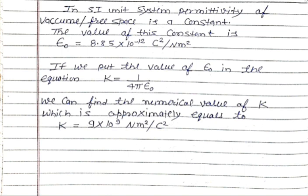In the SI unit system, the permittivity of vacuum or free space is a constant. The value of epsilon-naught is 8.85 × 10⁻¹² coulomb squared per newton meter squared. If we substitute this value into k equals 1 upon 4π epsilon-naught, we get k equals 9 × 10⁹ newton meter squared per coulomb squared.